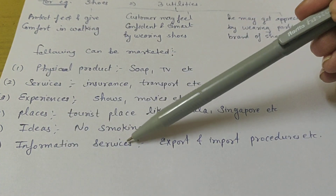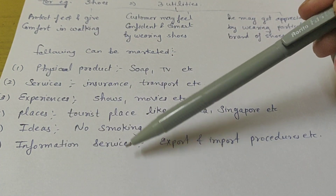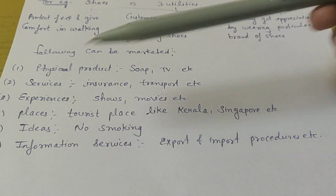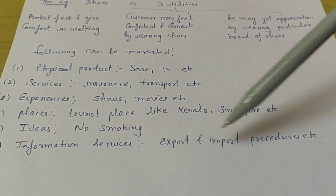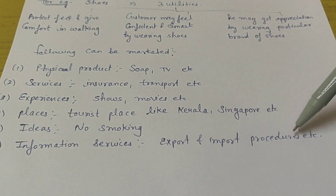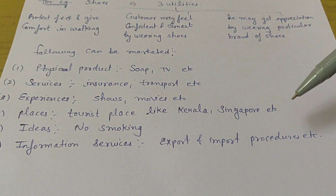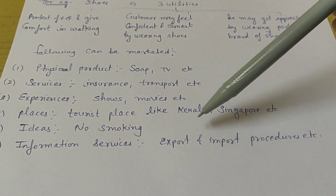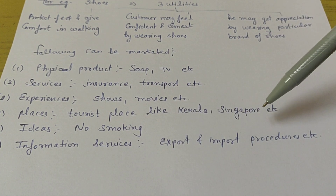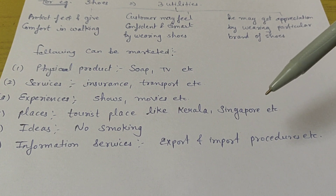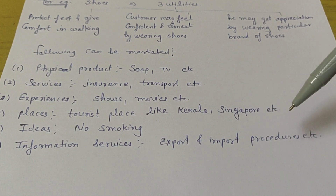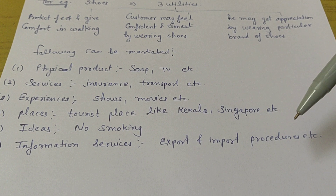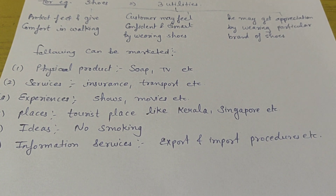Sixth and the last is information services. You can also provide and market any information. Like export and import procedures — if you don't know any particular information about export or import, you can find that information from an office. Call and find the procedure, and information will be easily found. So that covers what can be marketed — this is a small portion but it is bigger than that.